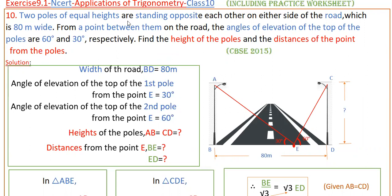Two poles of equal heights are standing opposite each other on either side of the road, which is 80 meters wide. BD is 80 meters — the width of the road. From a point between them on the road, the angles of elevation of the top of the poles are 60 degrees and 30 degrees respectively.